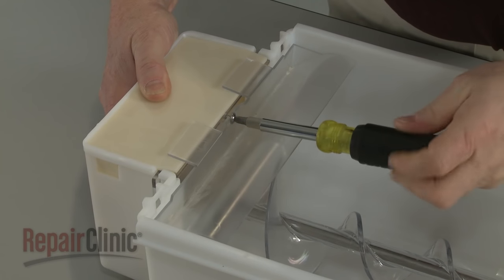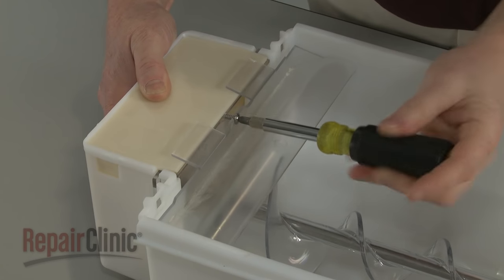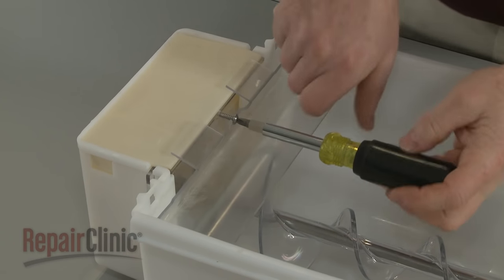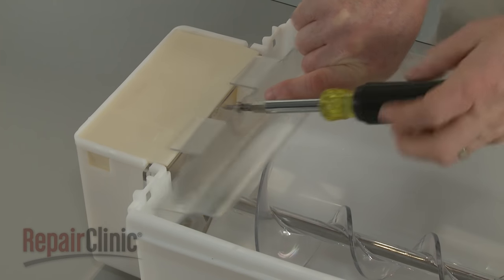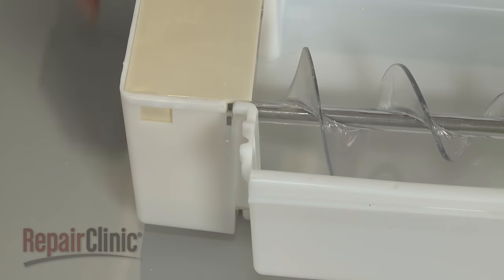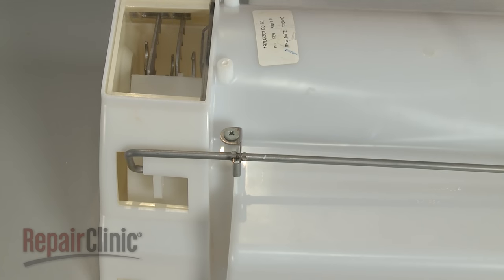Next, unthread the screw to release the shield. Flip the bucket over and remove the screws securing the actuator arm bracket.